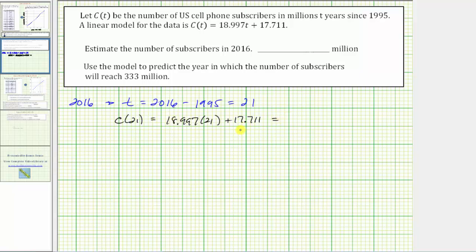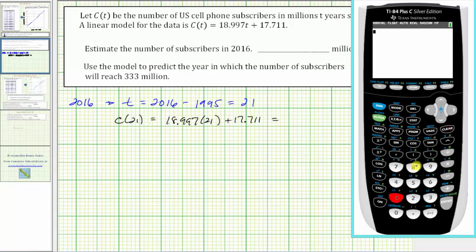Let's determine this function value using the graphing calculator. We'll enter 18.997 times 21 plus 17.711.